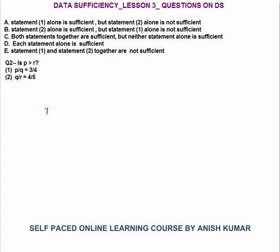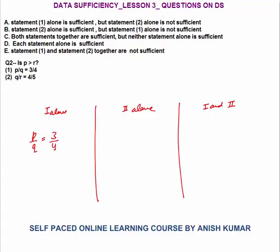Question 2: Is p greater than r? First, check Statement 1 alone — p divided by q equals 3 by 4. R is not in this statement, so we don't know the connection between p and r. Statement 1 alone is not sufficient. Statement 2 alone — q divided by r equals 4 by 5. P is not there, so we can't say whether p is greater than r. Statement 2 alone is also not sufficient.